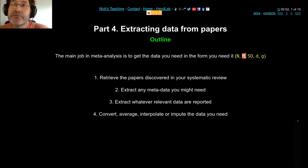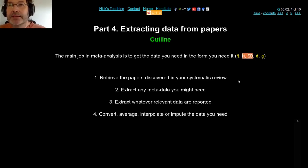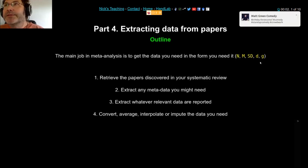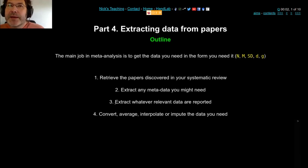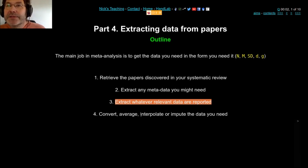You can recreate or estimate those numbers from lots of other things. So if you know the number of subjects and you have a t-test, for example, you can work out the other two. The outline of this section: hopefully you've got some papers and you know where to find them. Extracting the metadata is up to you — what things do you need to know about your papers in order to include or exclude them? The hard part is extracting the data you need from the paper.